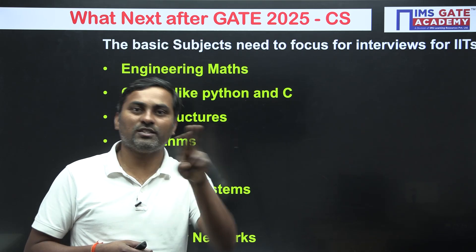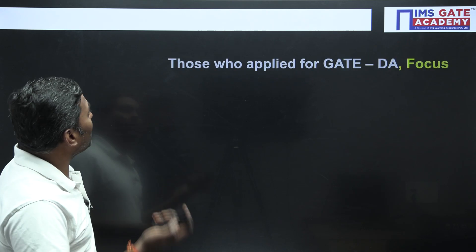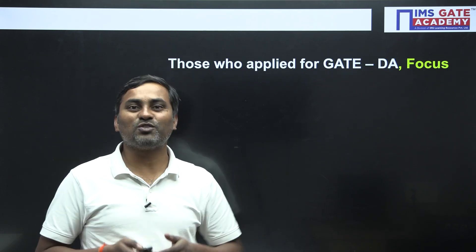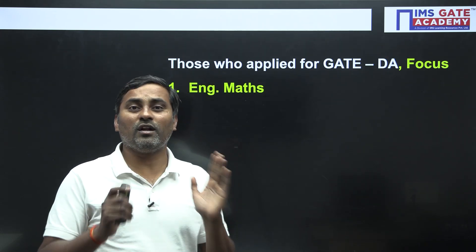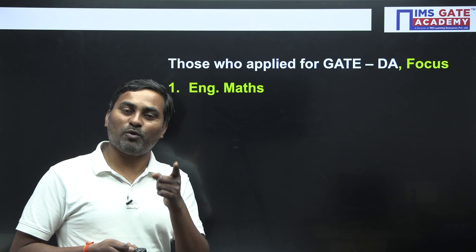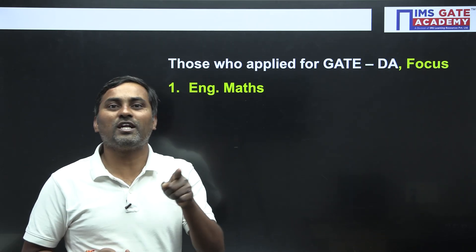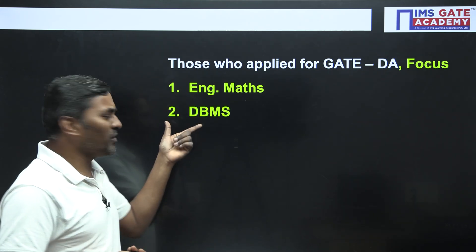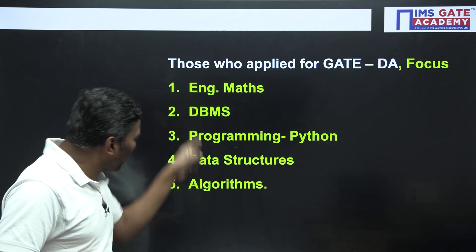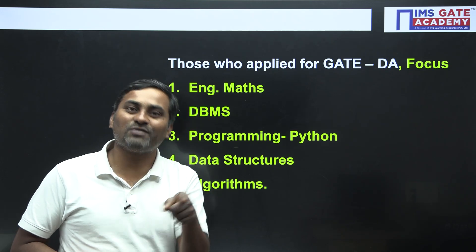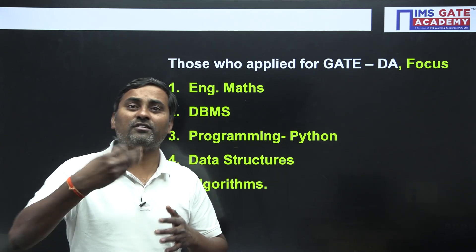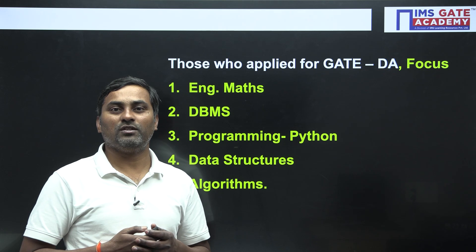At least five to six subjects should be properly prepared — this will help you for both the written test as well as the interview. For those who applied for the DA paper, you have about 10 to 11 days. In these 10 days, focus more on Engineering Mathematics, DBMS — which you already studied — Python programming, and Data Structures and Algorithms. Preparing these five subjects will help you for the DA paper as well as written tests and interviews for IITs. After the DA paper, focus on these five to six subjects for one to two months.